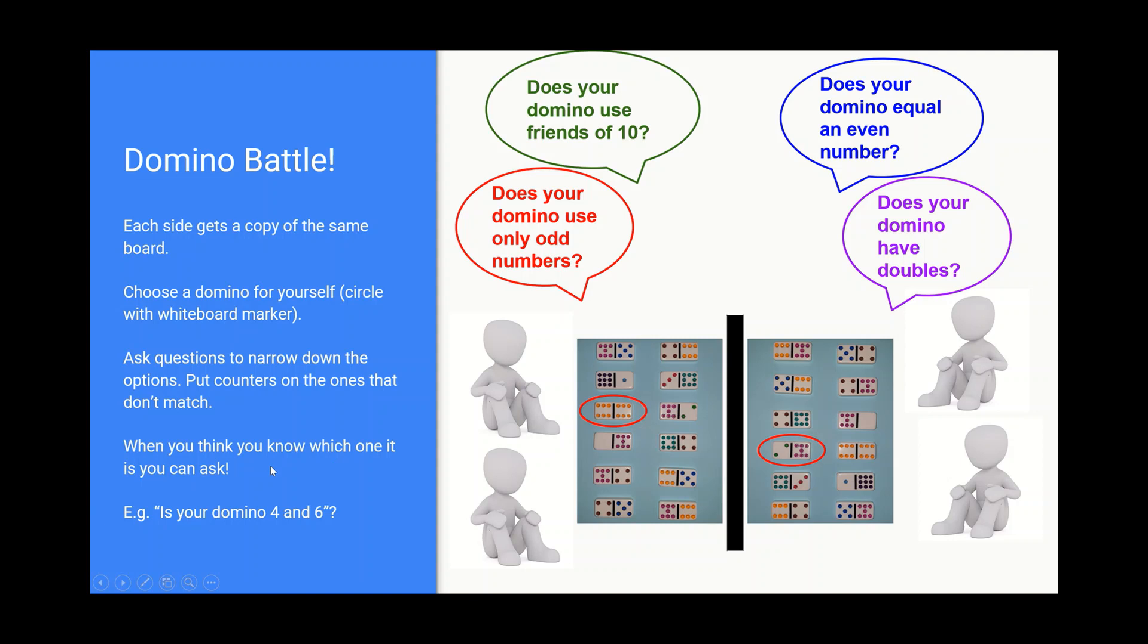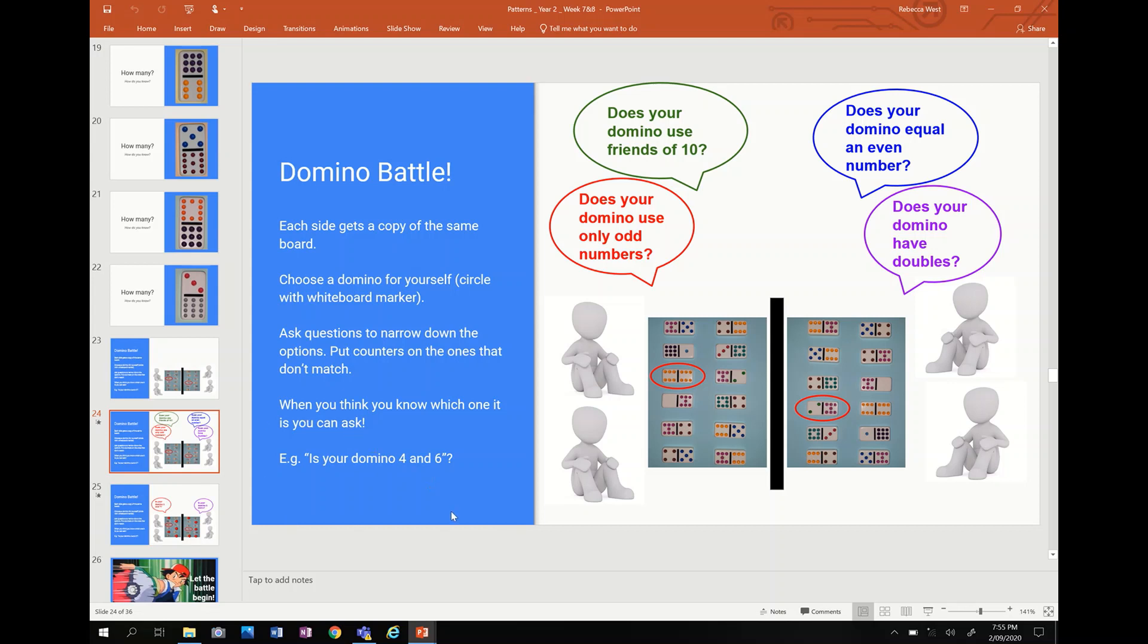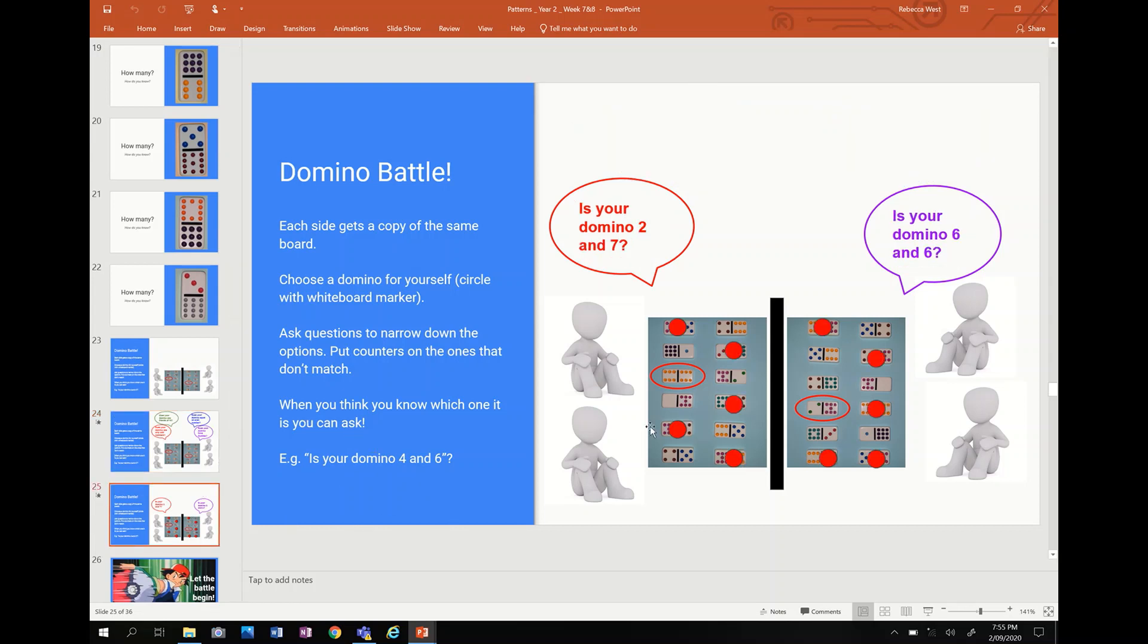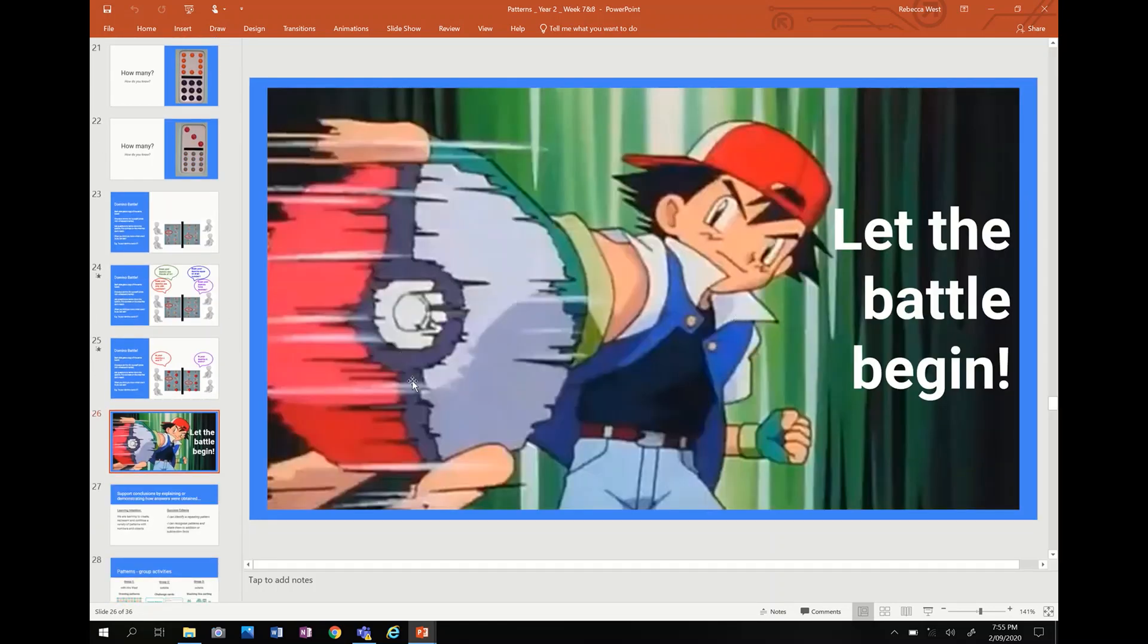And then eventually they'll get to the point where they think they know which one it is. And they can say, is your domino four and six? Or is your domino six and six? Or is your domino seven and two? And they'll be able to go that way. They might even ask things like, does your domino total 12? Because you never know. It could be 12 on one side and zero on the other side. And that's how we play. And then the idea being is that you might. Oh, sorry. So I'll just show you this slide here. This is where, you know, the counters are eventually blocked out at the end there. And it might look like that. And then I have this funny picture that I put up saying, let the battle begin. Just a Google picture that I used.